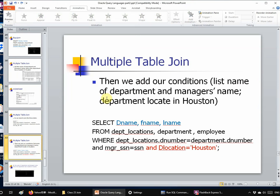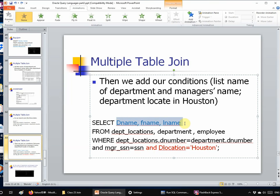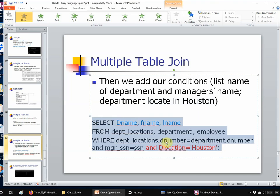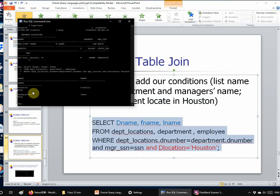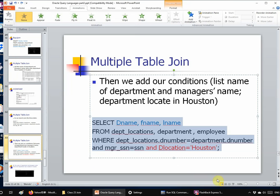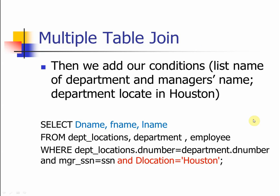Coming back to the question — we want the department name and the first name and last name of the managers with a location in Houston. We specify only those three attributes in SELECT, so Oracle won't give us the huge table. We add the condition that location equals 'Houston'. The result is: Research department — Franklin, Headquarters — James Borg. Compared to what we saw earlier, this is much more understandable. This is how we join multiple tables to gather the information we're interested in.